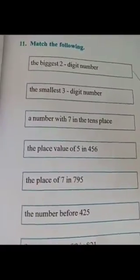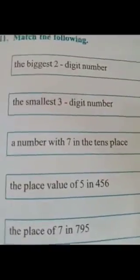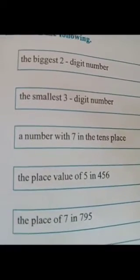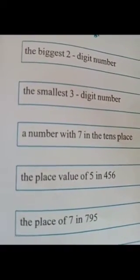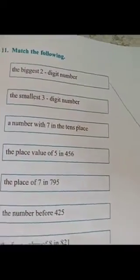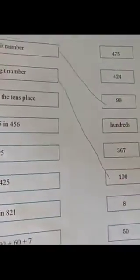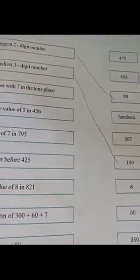Now, second one. The smallest three digit number. In the biggest two digit number, if one is added, that number comes. What is that? The smallest three digit number is one hundred. Ninety-nine plus one equals one hundred. One hundred is the smallest three digit number.